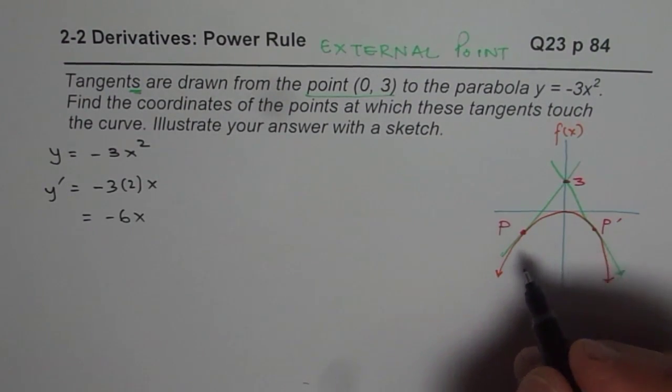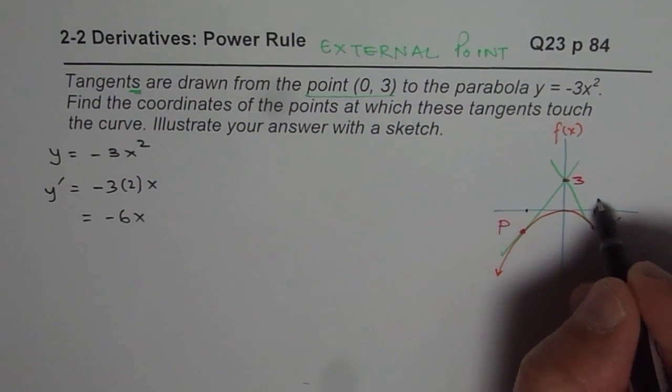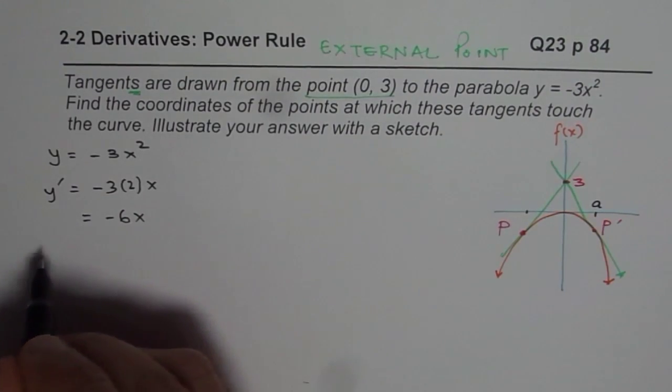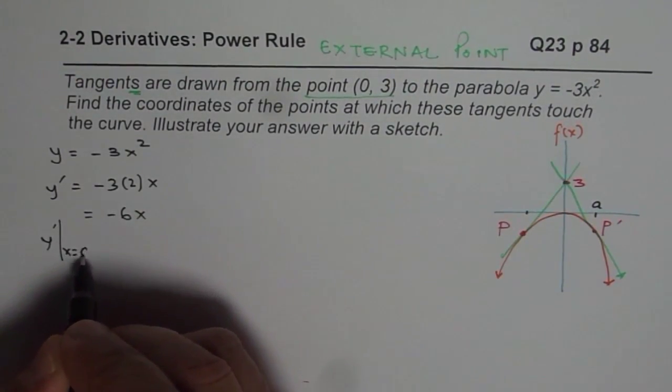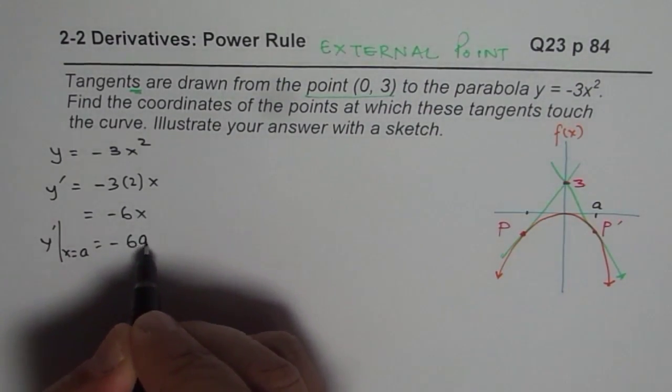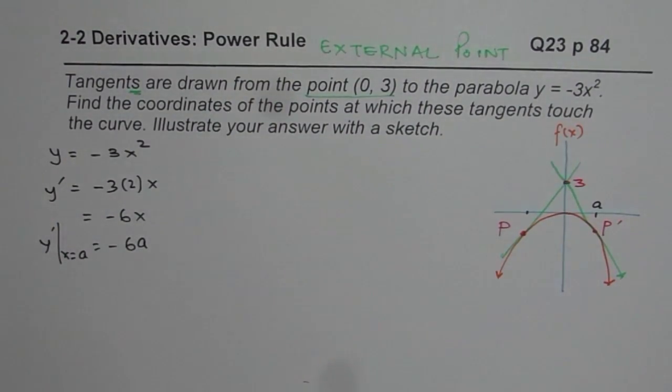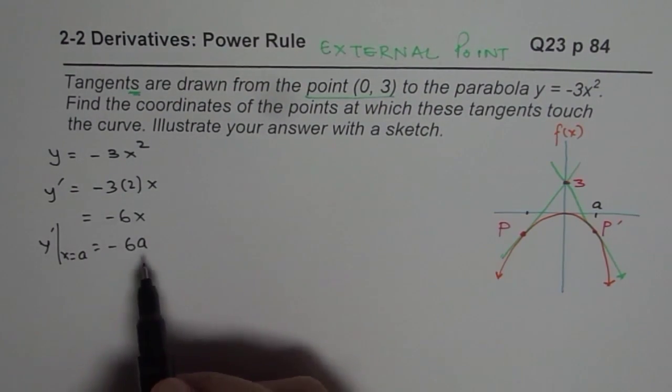So let us consider that these points, let's consider point is at A. So y' at this point A, at x = A, will be -6a. So that is the tangent at point A. Now the question is, what is A?